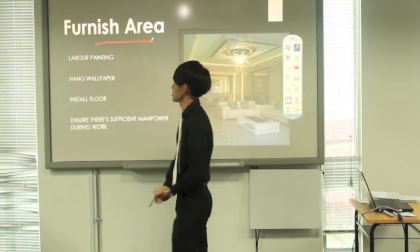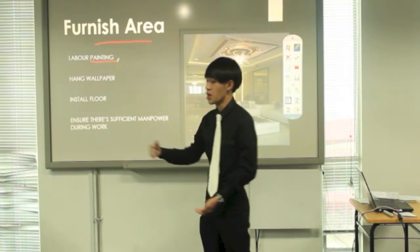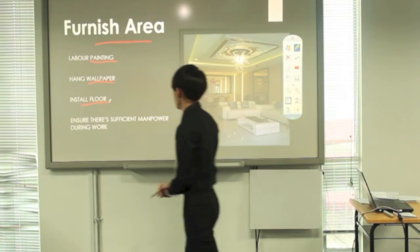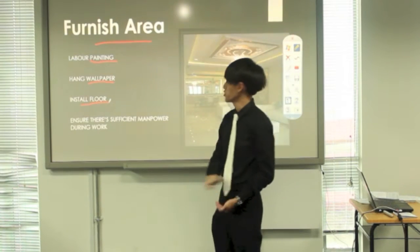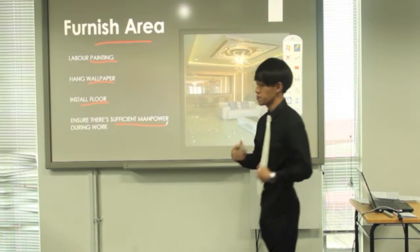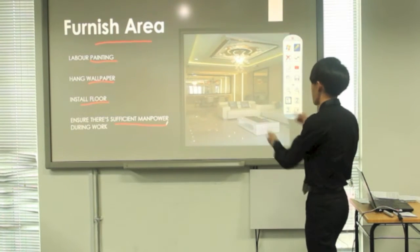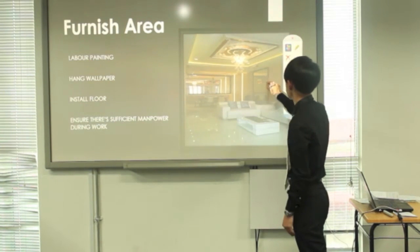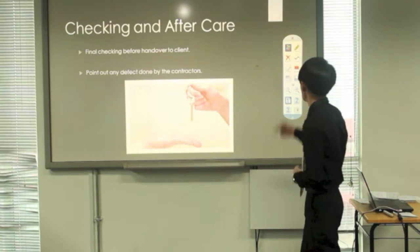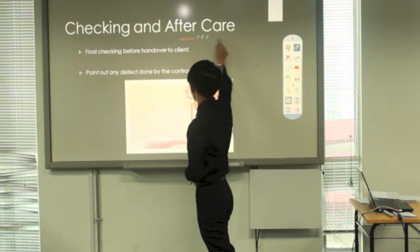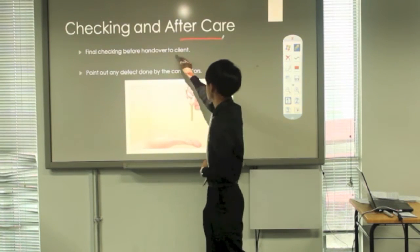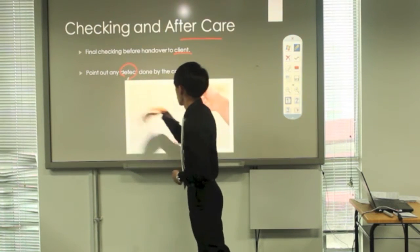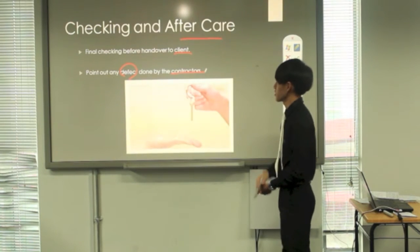After we purchase the furniture and the furniture has reached your home, we start to finish the area. We need to consider about three things. The first thing is about painting. Make sure the painting matches the color that you want. The second is wallpaper. The third is the floor. In this section, we need to ensure a very important thing, which is there is sufficient manpower. We need to have enough persons and manpower in order to finish the area. After finishing the area, we need to do the last section, which is check and do after plan. We need to do final check with the client and ensure this is what the client needs. We need to point out if there is any feedback or any mistake done by the contractor, we will redo it until the client is satisfied.